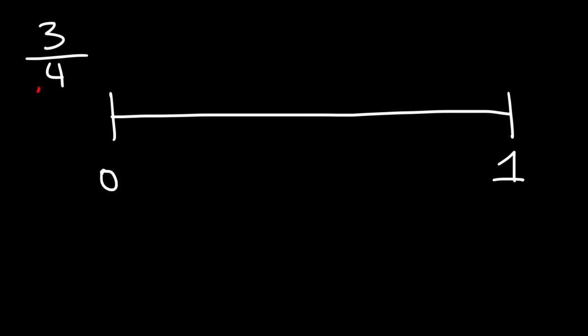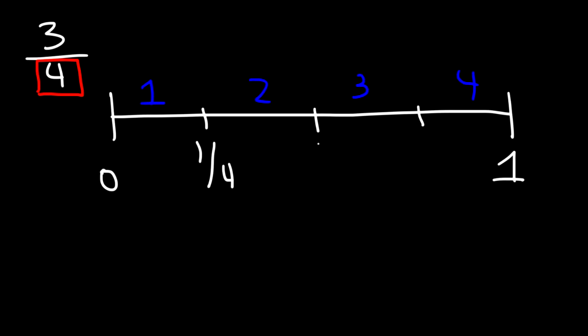The first thing you need to do is consider the value of the denominator of the fraction, which is 4. That means you want to break the number line into four equal parts. I'm going to put a line in the middle and marks here and here, so this is the first space, second, third, and fourth — four equal spaces between 0 and 1.